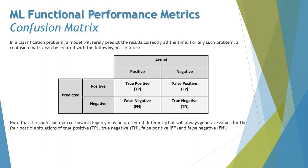To talk about the confusion matrix, first — why the name 'confusion'? It certainly creates confusion for us. Basically, it helps you identify what confusion the ML model is having. The definition will come along once we understand the table. In a classification problem, a model will rarely predict results correctly all the time.